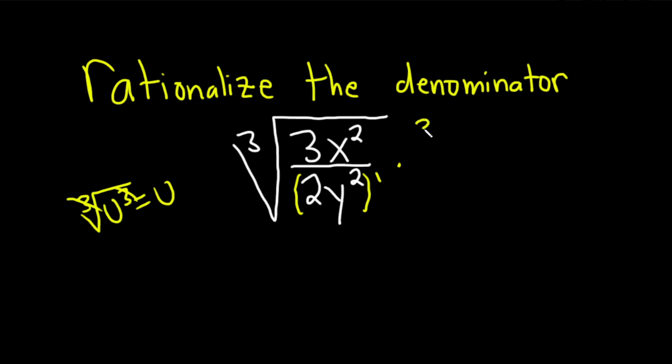So like this, cube root 2y squared squared over cube root 2y squared squared.